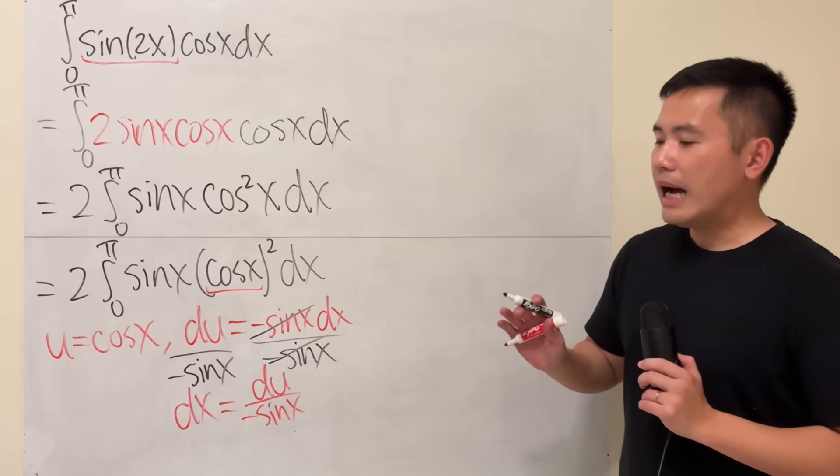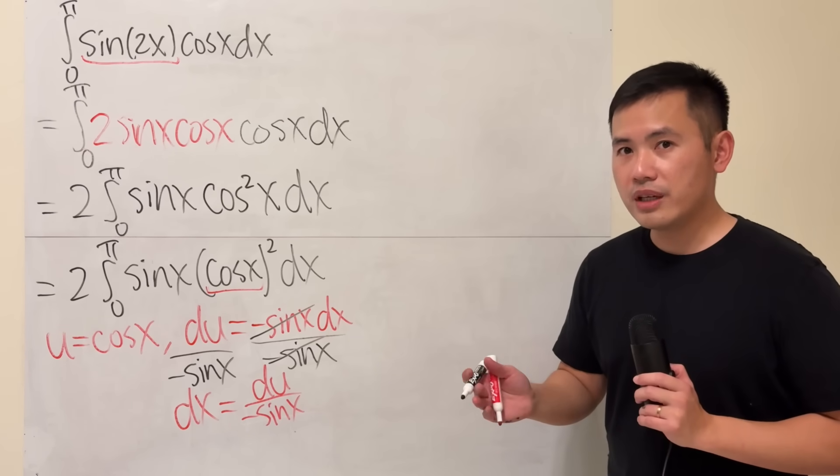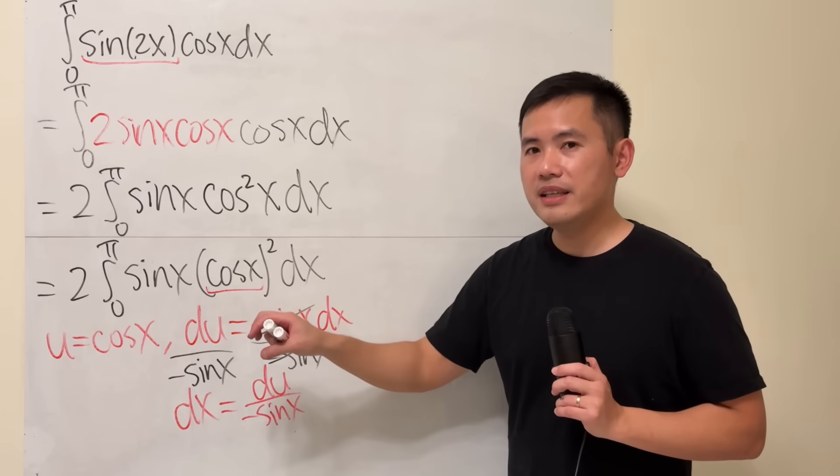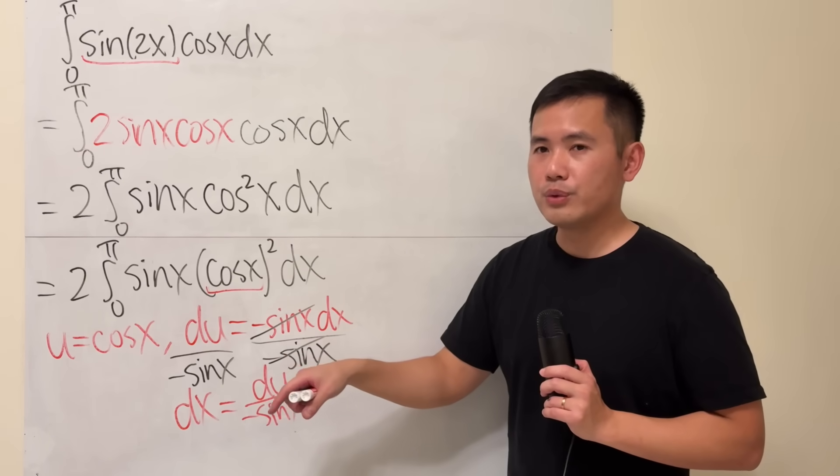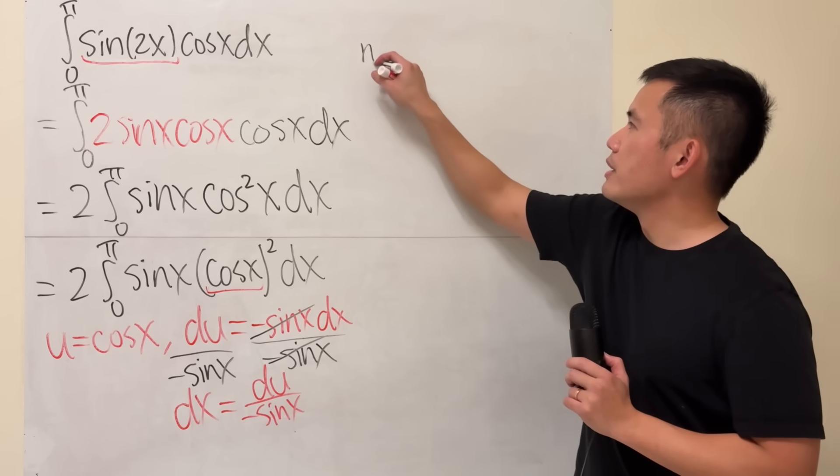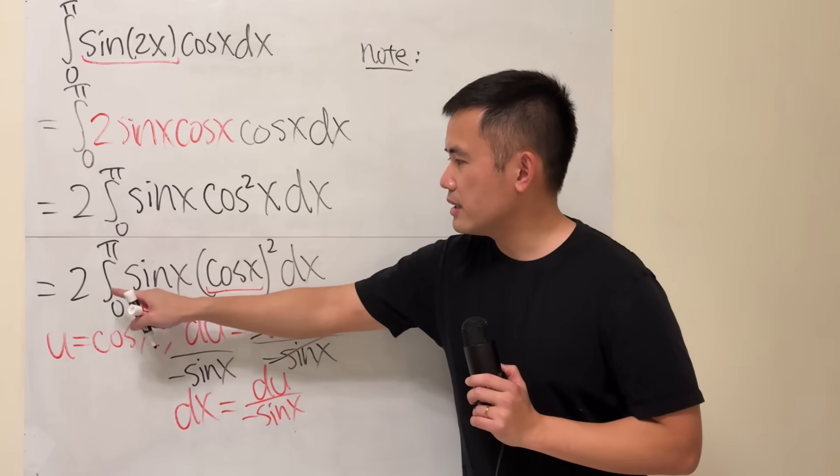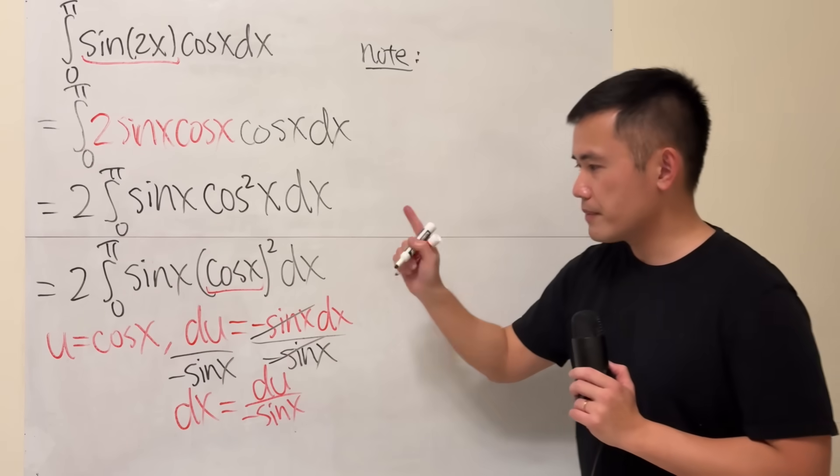Now I'm going to follow the solution, because for the solution they worked out the indefinite integral first, and then they plug in values. So I'm just going to make a little note right here. What they did is they just look at the integral without the zero and the pi. Alright, so I'll do that.